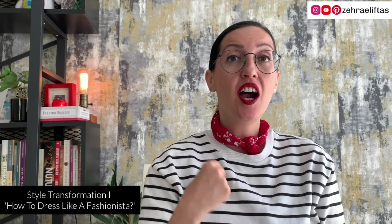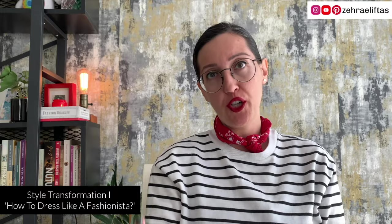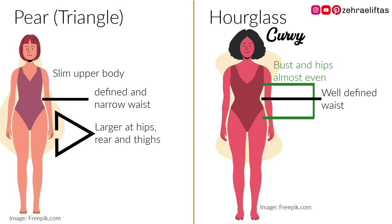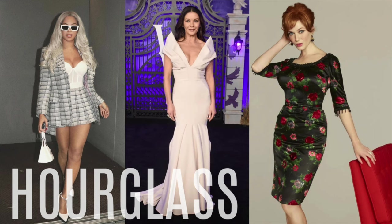Second: hourglass or curvy. Luckily, this is a balanced silhouette. The busts and hips are almost even with a well-defined waist. Examples include Beyoncé, Marilyn Monroe, Ashley Graham, and Christina Hendricks — do you remember her outfits in Mad Men?